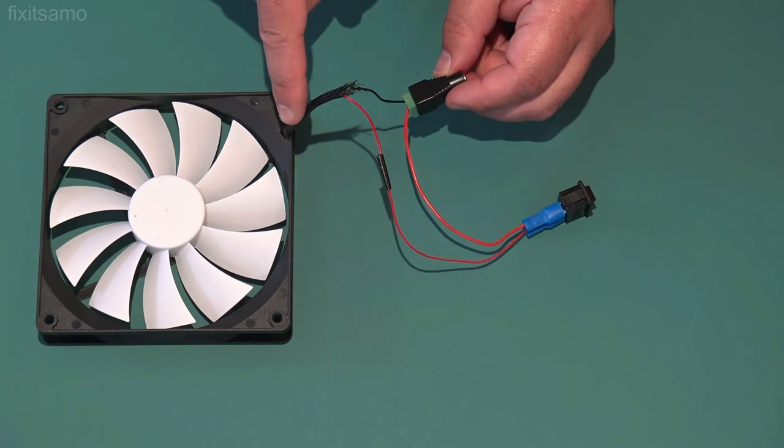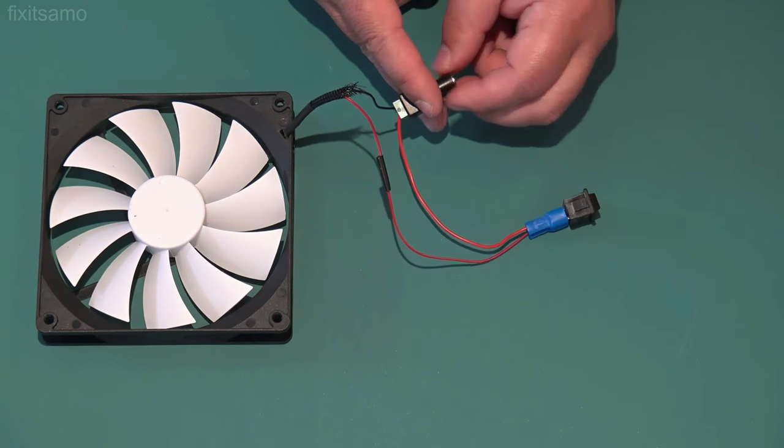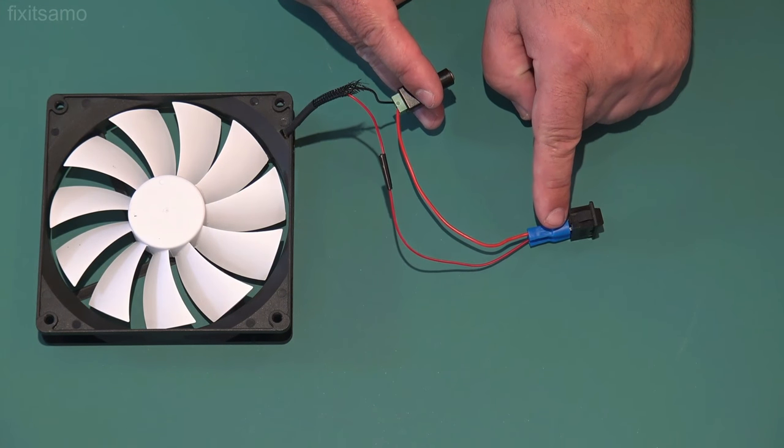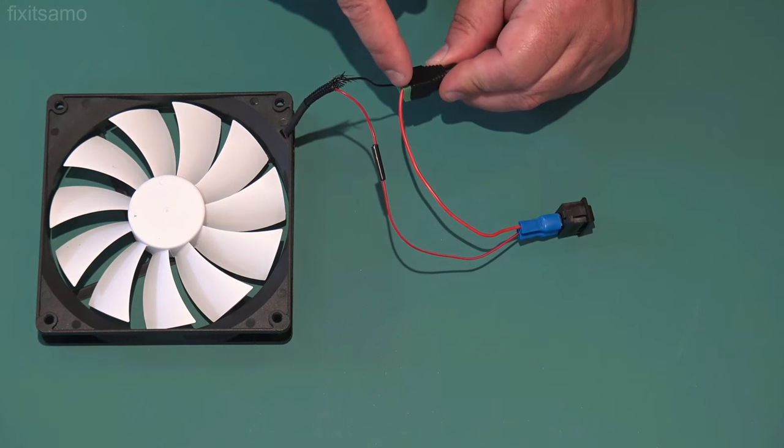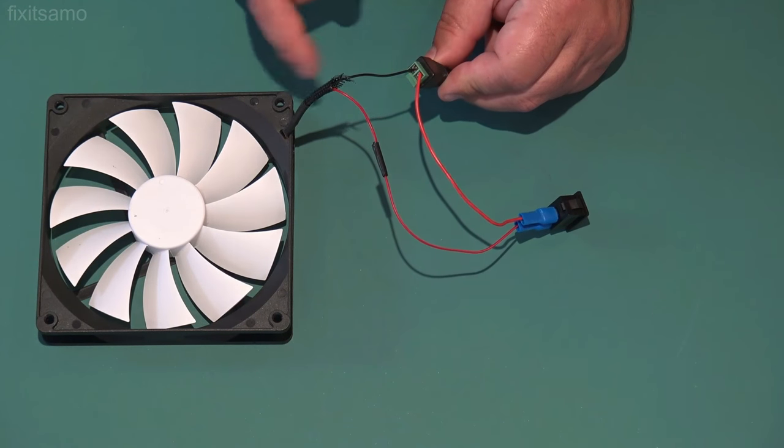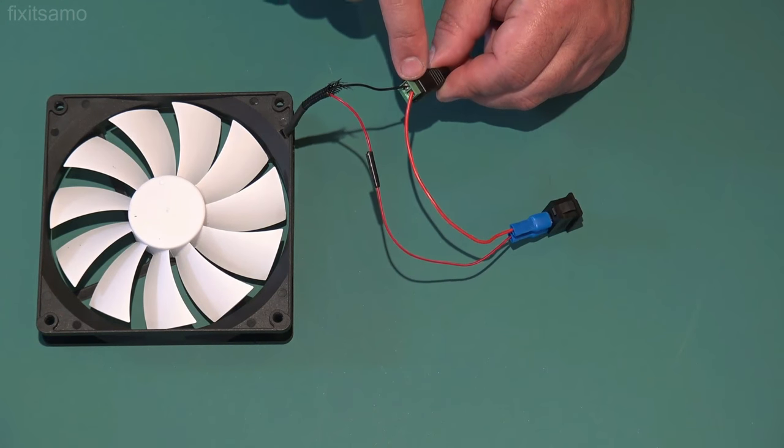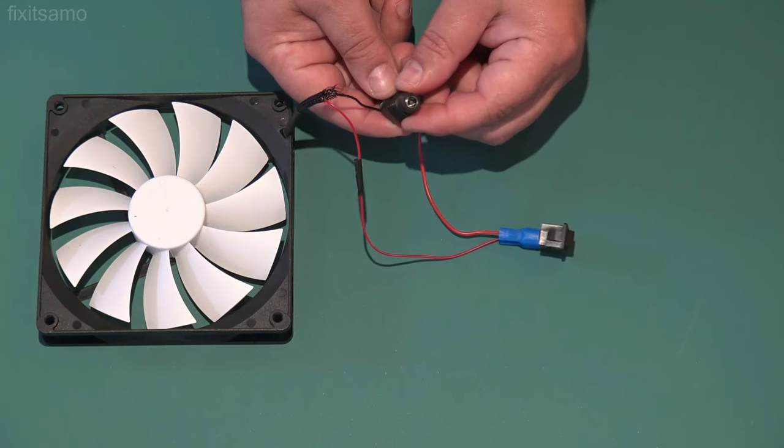So what I've done is the red wire coming from the fan is plugged to the on off switch, and I brought another wire from the switch to the adapter connection. The black wire from the fan goes directly to the adapter plug.